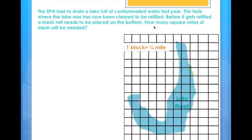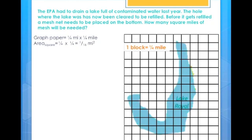To do this, you will first need to look at what each square represents. Each block is a fourth of a mile, or a quarter. To find what the area of each block is, you will multiply one-fourth by one-fourth, and get one-sixteenth of a square mile.